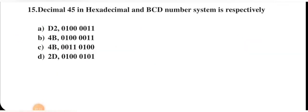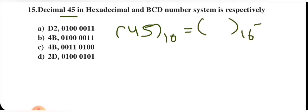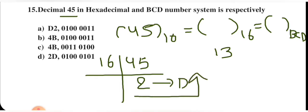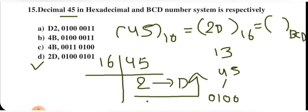Next: decimal 45 in hexadecimal and BCD. For hex: 45 ÷ 16 = 2 remainder 13 (= D), so 45 in hex is 2D. For BCD: 4 is 0100 and 5 is 0101, so BCD representation is 01000101. The correct option matches 2D and 01000101.